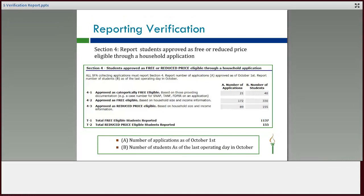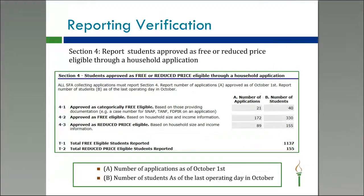Section 4 is where you'll report all the free and reduced price students who are eligible based on an application. In 4-1, you will report those that are categorically free eligible — those based on an application that had a case number for SNAP or TANF. In 4-2, you'll report those that are free eligible based on income. Then in 4-3, you'll report those approved as reduced based on income.